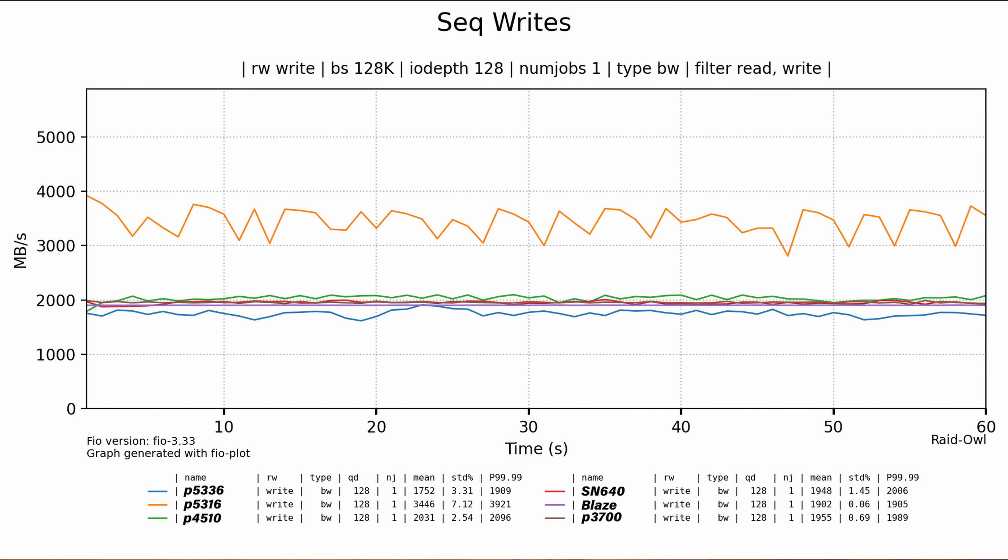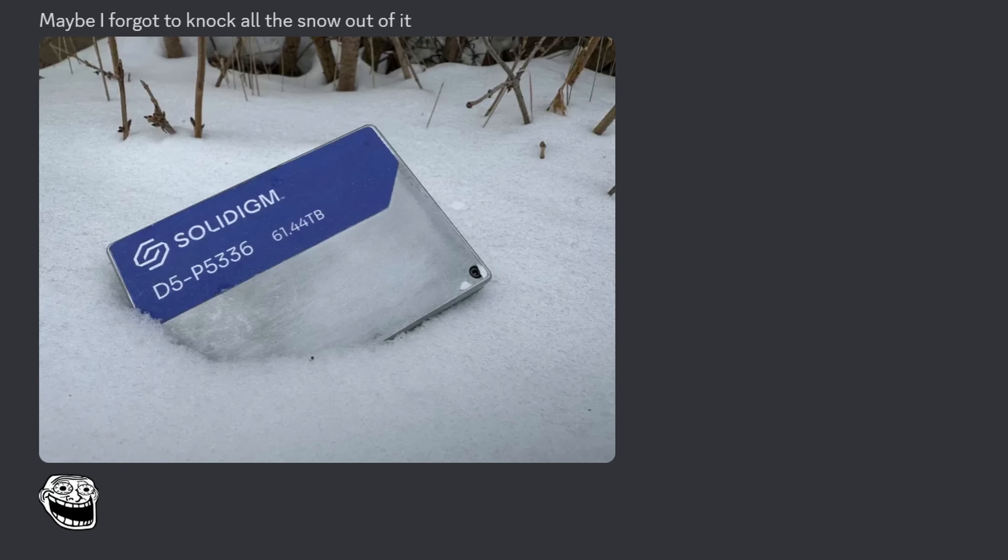Moving on to sequential writes is where we get some interesting results. Nearly all of the drives were consistently sitting at 2000 megabytes per second, except for the P5316, which was hovering between 3000 and 4000 megabytes per second. Not sure if this is a caching thing or if something's up with the drive — it has been through the ringer a little bit. This is pretty common in terms of sequential write speeds being a good bit lower than the reads, so I can accept these results.